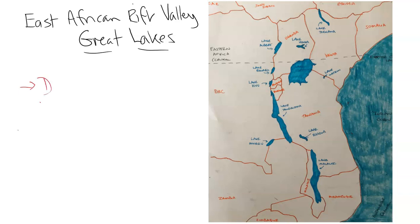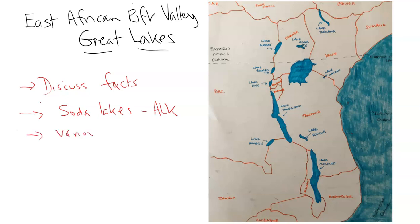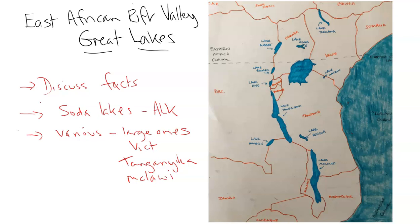We're going to discuss the general facts about the area. We're going to look at the Soda Lakes and what they are in terms of alkalinity. We will look at the various large lakes in more detail: Lake Victoria, Lake Tanganyika, Lake Malawi, and also Lake Albert. We'll also discuss Soda Lakes, specifically Lake Natron, which is famous.